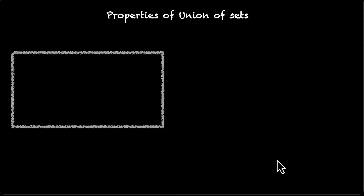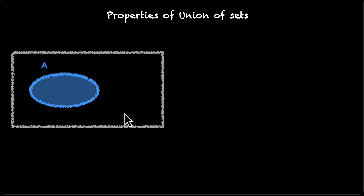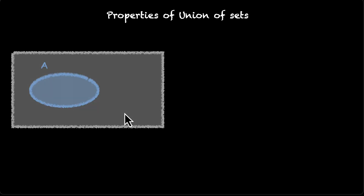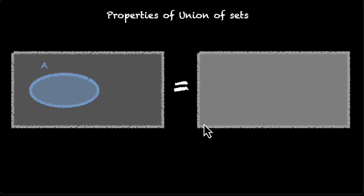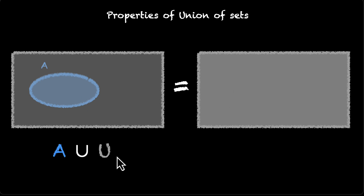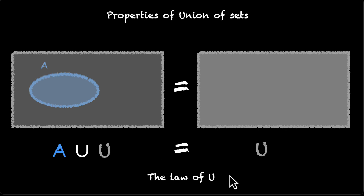Here we have the universe and set A. If we find the union of A and the entire universe — taking everything inside A and adding everything inside the universe to it — we get the entire universe, because we're covering the entire ground. So A union U is equal to U. This is called the law of U.